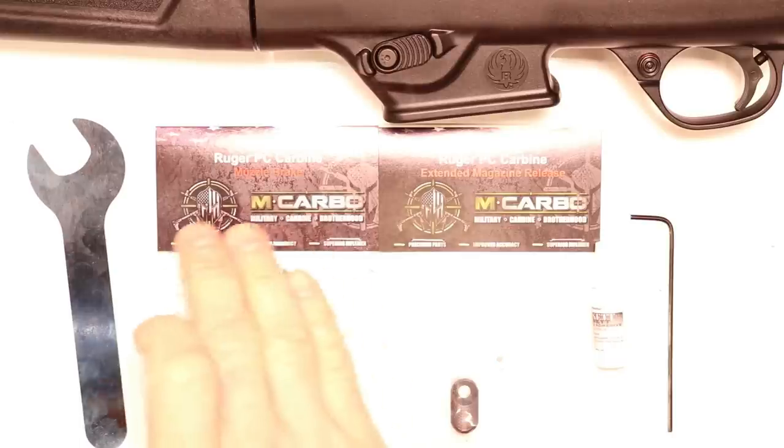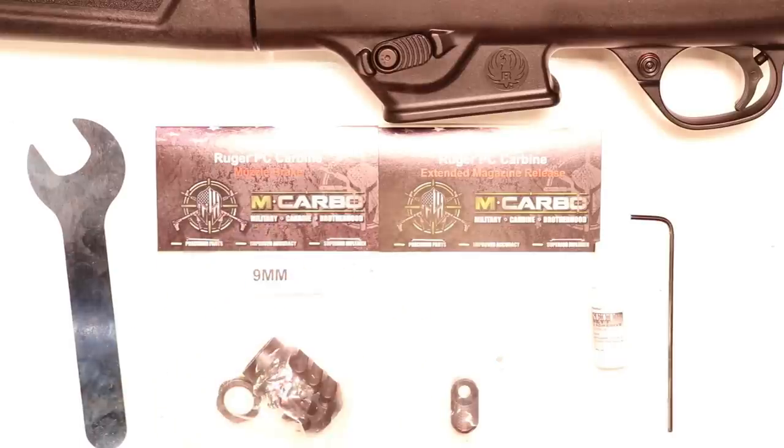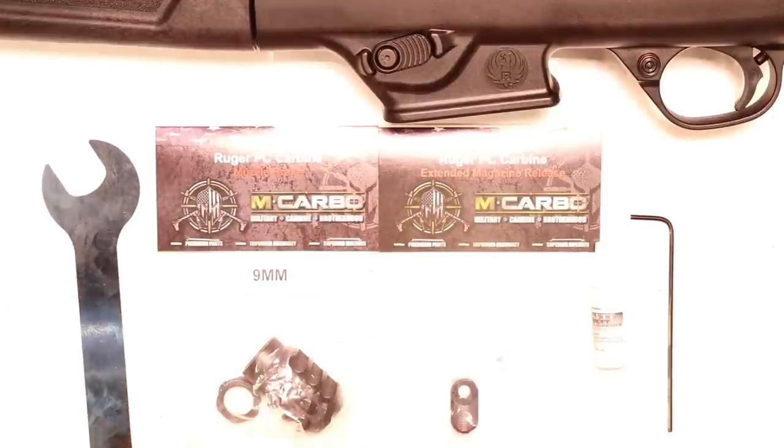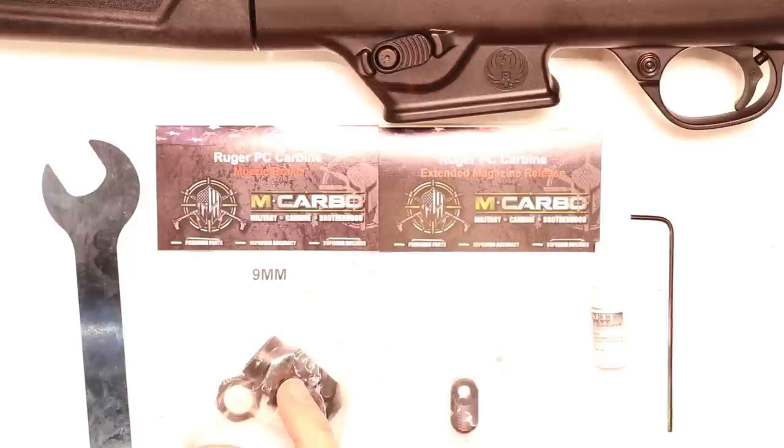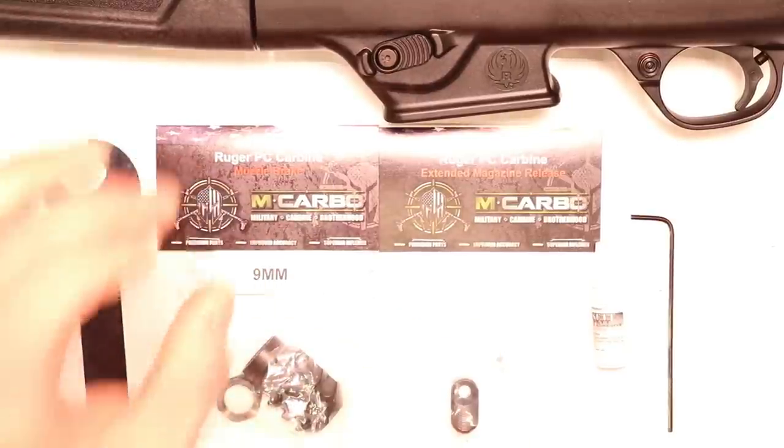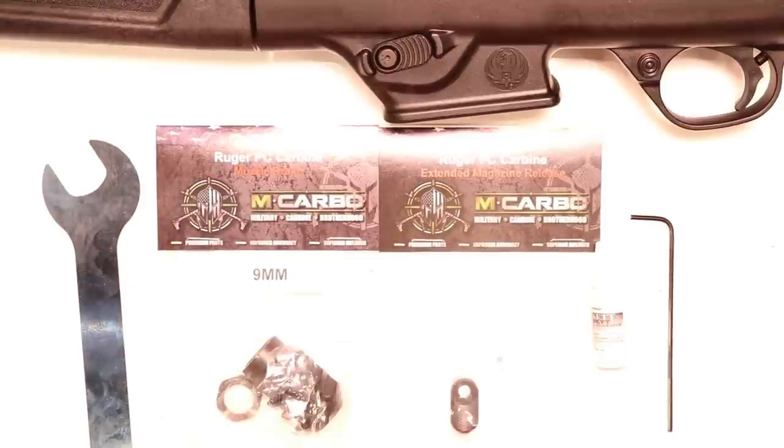Parts and tools needed for this build, the Ruger PC Carbine muzzle brake by MCarbo. It's an A311 stress-proof carbon steel muzzle brake. Comes in 9 millimeter and 40. Also comes with this wrench so that you can tighten the jam nut against the muzzle brake. Love that we don't have any sort of set screws that have to go into the muzzle brake to lock it to the barrel. It won't screw up the factory threads on your barrel.